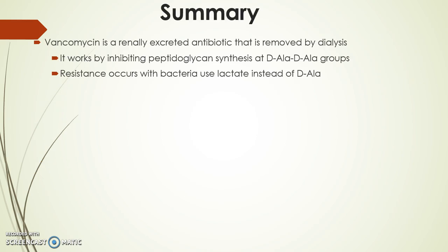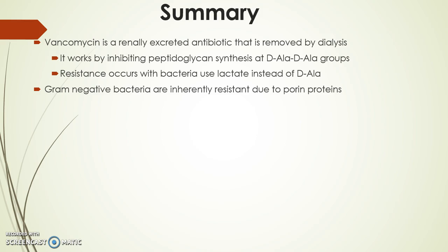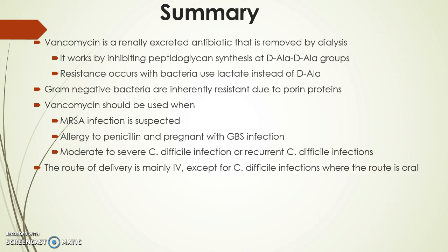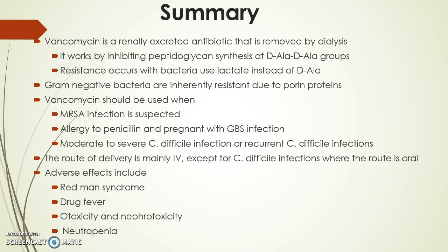Summary: Vancomycin is a renally excreted antibiotic that is removed by dialysis. It works by inhibiting peptidoglycan synthesis at D-alanine D-alanine groups. Resistance occurs with bacteria that use lactate instead of D-alanine. Gram-negative bacteria are inherently resistant due to porin proteins. Vancomycin should be used when MRSA infection is suspected, for penicillin allergy in pregnant patients with GBS infection, or for moderate to severe or recurrent C. difficile infections. The route of delivery is mainly IV, except for C. difficile where the route is oral. Adverse effects include Red Man syndrome, drug fever, ototoxicity, nephrotoxicity, and neutropenia.